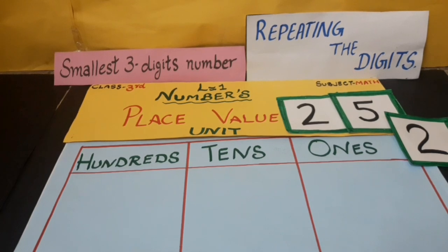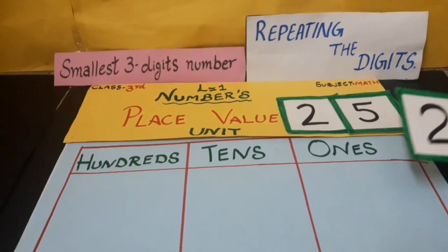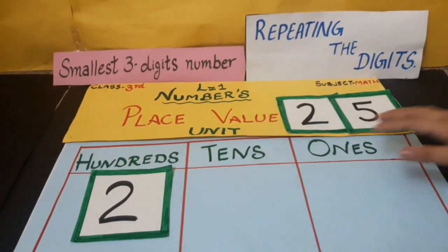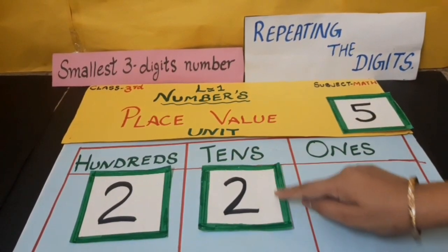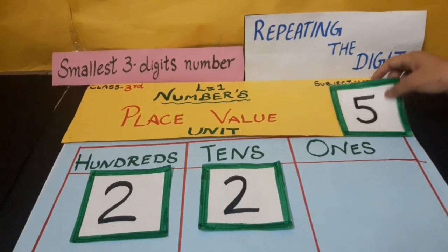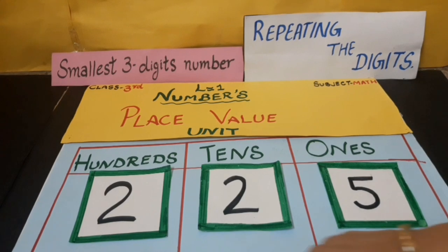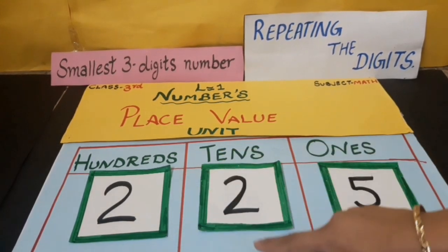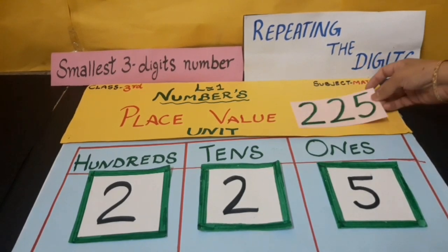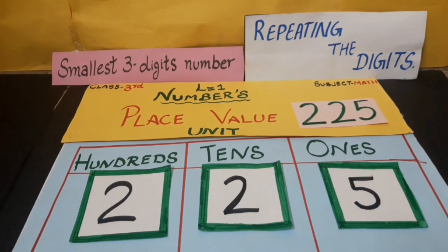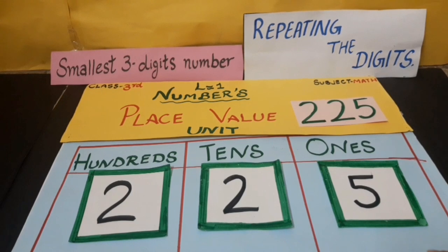We will make the smallest number by repeating the digit. We put 2 on the 100s place, as it is the smaller one. Then 2 on the 10s place, and 5 on the 1s place. The number becomes 225. The smallest 3-digit number by repeating the digit is 225.